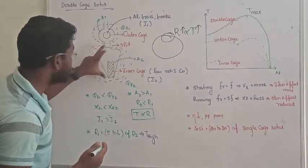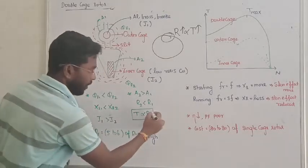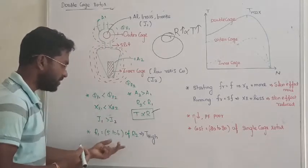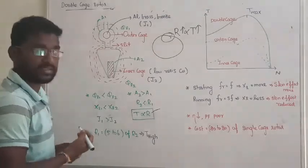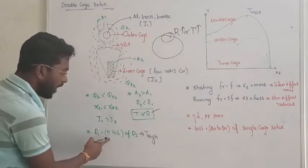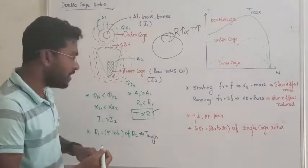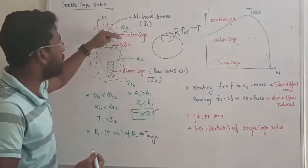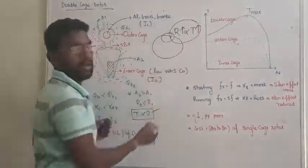So in your inner cage, majority area is more so resistance is getting reduced. So around, see the resistance in the outer cage, R1, and the resistance in the inner cage R2, that is 5 to 6 times, R1 is 5 to 6 times more than R2. So it clearly denotes that the value of resistance at the outer cage is very very high. So with the help of this outer cage high resistance, we can develop more starting torque.